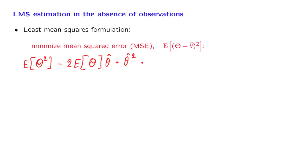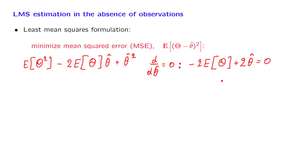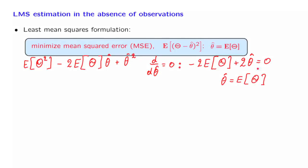This is what we want to minimize. We take the derivative with respect to theta hat and set it to 0. This gives us minus 2 times the expected value of theta, plus twice theta hat, equal to 0. When we solve this, we find that theta hat, the optimal estimate, is equal to the expected value of theta. So this is the answer to our optimization problem: the optimal estimate, according to the least squares criterion, is the expected value of the random variable.